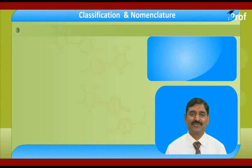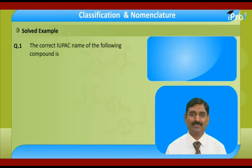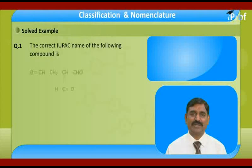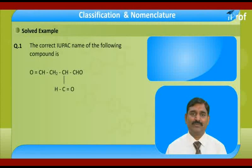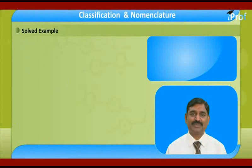Solved examples. First, find the correct IUPAC name of the following compound. This compound has 3 CHO groups. Whenever a compound has 3 CHO groups, there is no possibility to take all CHO carbons. That's why we take the longest 2-carbon chain which has CHO as a substrate.